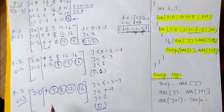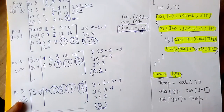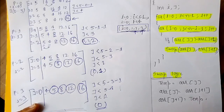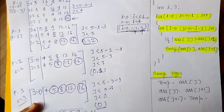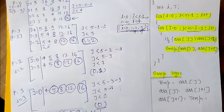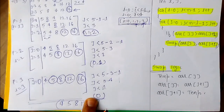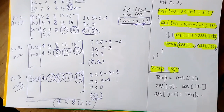The sorted array is 4, 5, 8, 12, 16. Hope you got it, and thanks for watching the video.